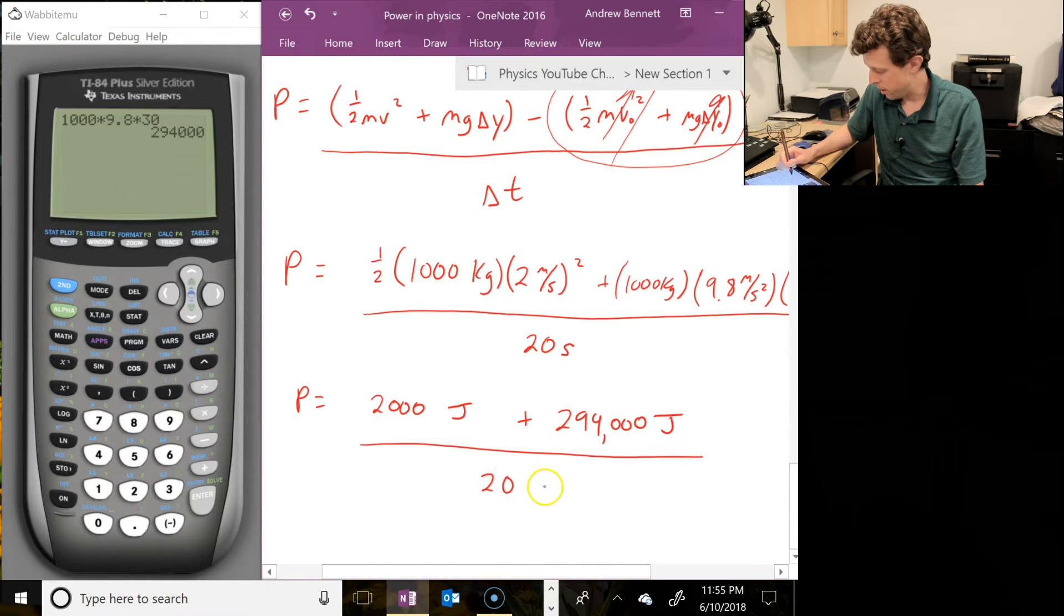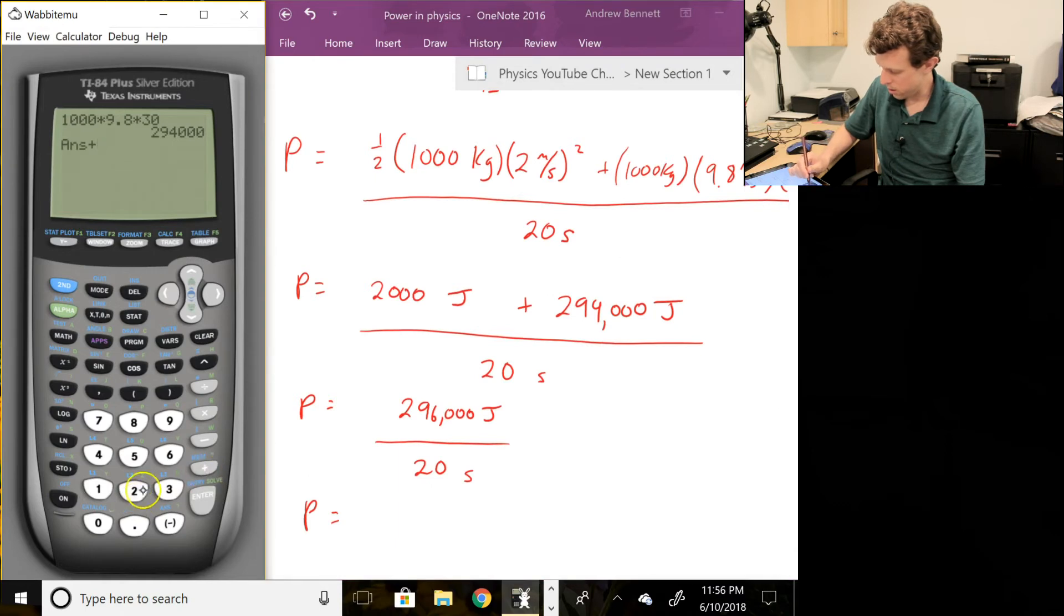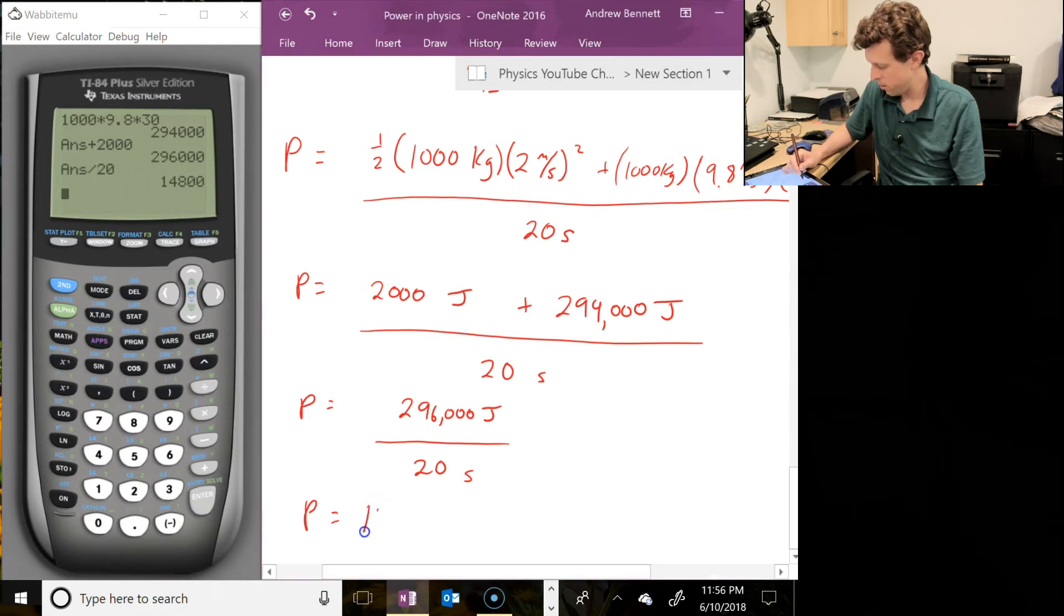All right, divided by 20 seconds. Okay, and then our power total is going to be, let's see, 294,000 plus 2,000 is 296,000. Sorry, that's our energy total, not power total. Divide it by 20 seconds. And so then power is, let's add in the 2,000 here. And then divide by 20 seconds. And we get to our 14,800, and then it's joules per second or watts.